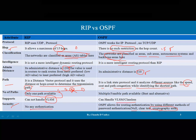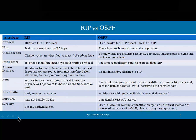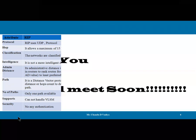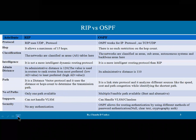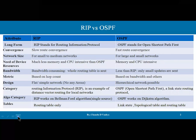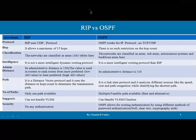So these are the differences we have discussed. I hope you understand these differences, because when you understand both protocols and compare them to each other, you will understand everything. Both are dynamic routing protocols, but RIP is a distance vector protocol and OSPF is a link state protocol — these are the key distinctions. Thank you so much.